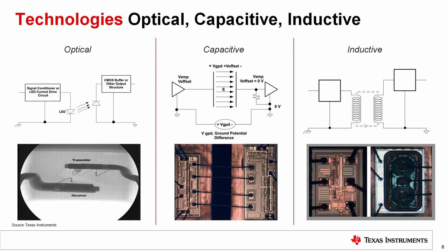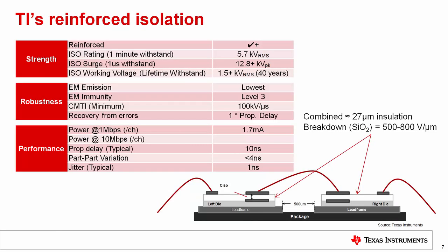All technologies have different advantages and disadvantages. Optical isolation is immune to electric and magnetic fields, but the LED suffers from degradation over its lifetime. Capacitive isolation can be made very space-optimized; however, it needs additional circuitry, making it more complex. Inductive isolation can be very efficient; however, it is susceptible to magnetic fields. TI uses capacitive isolation and achieves superior performance. TI's reinforced isolators use a specific architecture with two capacitors in series, resulting in a combined insulation of 27 µm of silicon dioxide, which has a breakdown voltage of 500 to 800 V per micrometer. The devices are rated at 5.7 kV RMS with a working voltage of 1.5 kV RMS for over 40 years.